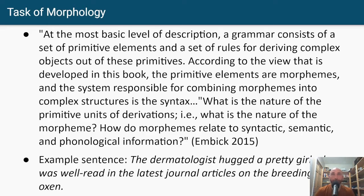This is a quote from Embick, who has a book called The Morpheme. He begins: 'At the most basic level of description, a grammar consists of a set of primitive elements and a set of rules for deriving complex objects out of those primitives. According to the view developed in this book, the primitive elements are morphemes, and the system responsible for combining morphemes into complex structures is the syntax.' The main question he tries to answer is: what is the nature of the primitive units of derivations — that is, what is the nature of the morpheme?